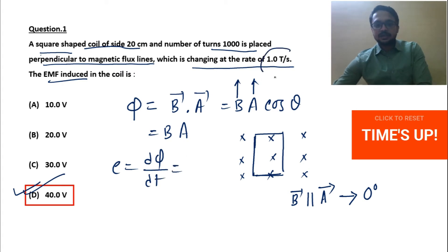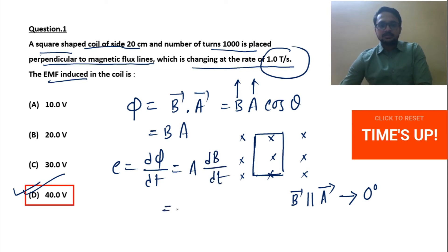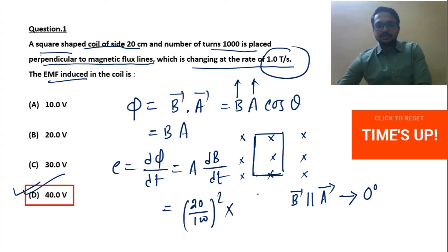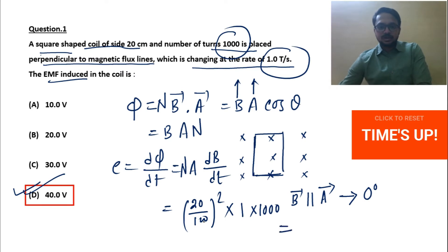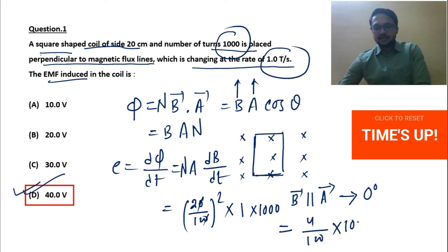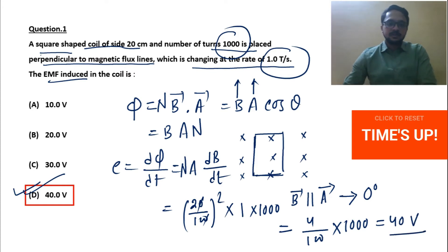Now EMF equals dΦ/dt. Which quantity is changing? B is changing at a rate of one tesla per second, so we take A·dB/dt. Area is given — side is 20 centimeter, so (20/100)², that is side squared. dB/dt is 1, and the number of turns N is also included, which is 1000. So: (0.2)² × 1 × 1000 = 0.04 × 1000 = 40 volt. Correct answer is 40 volt.